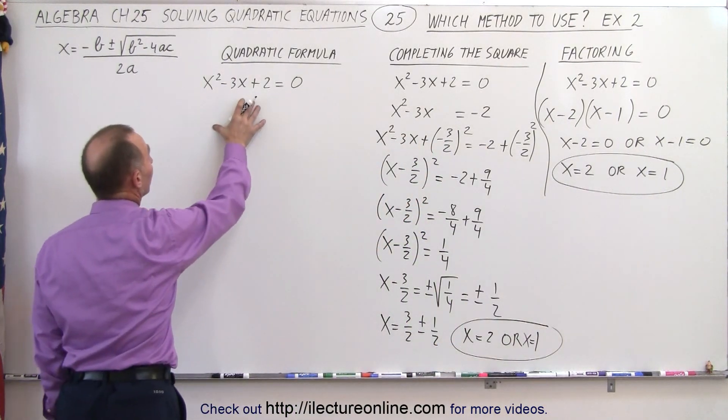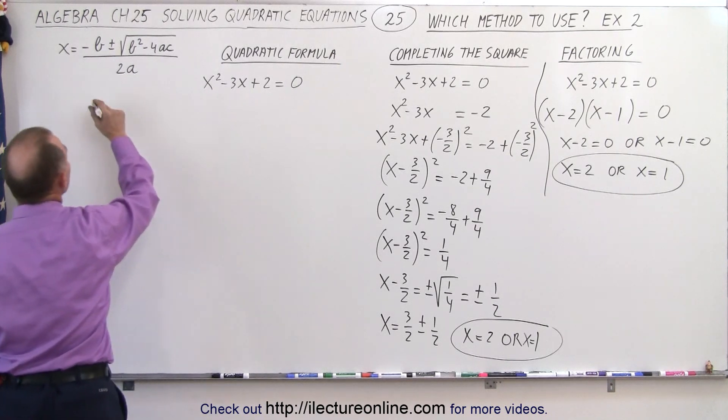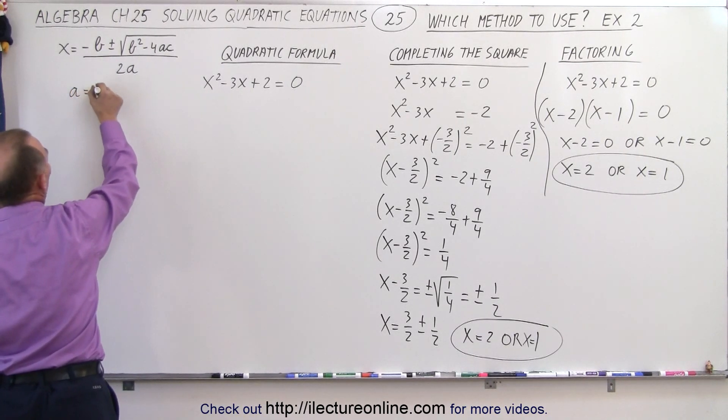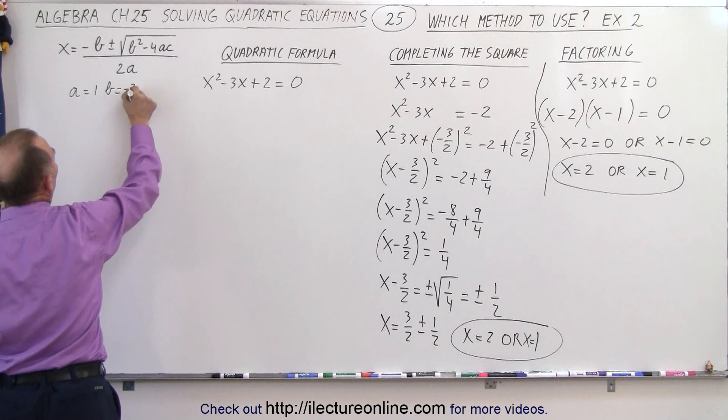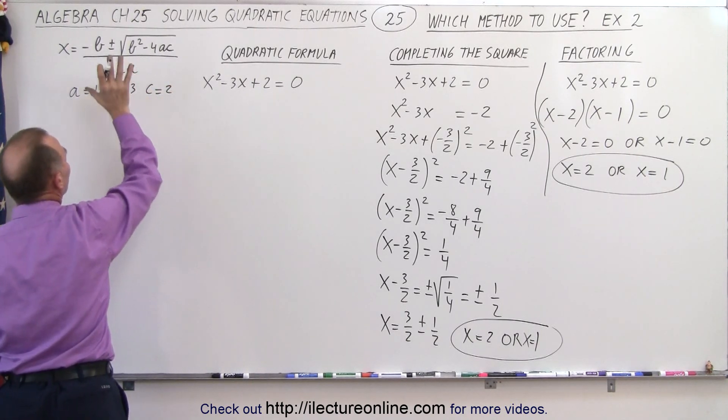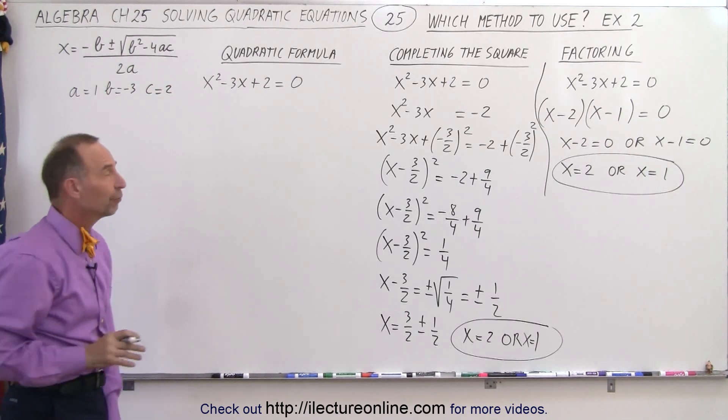Now I'm going to use the quadratic formula. So I'm going to identify A, B, and C. A is equal to 1, B is equal to minus 3, C is equal to 2. And then plug those numbers into the quadratic formula.